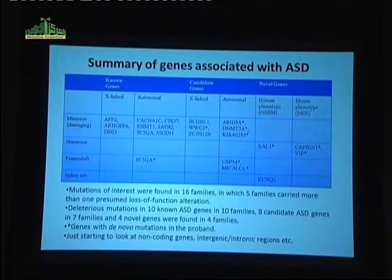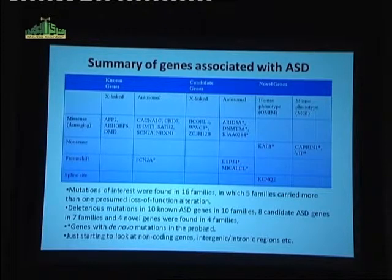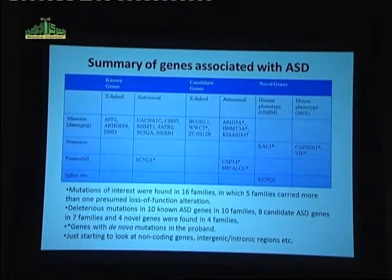Deleterious mutations in 10 known autism genes in 10 families, 8 candidate ASD genes in 7 families, and 4 de novo novel genes were found in 4 families. I've highlighted with an asterisk those de novo mutations.